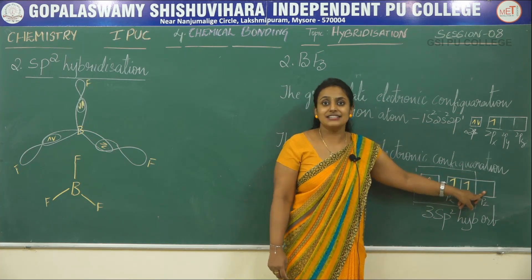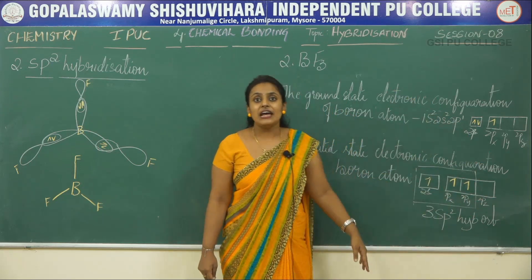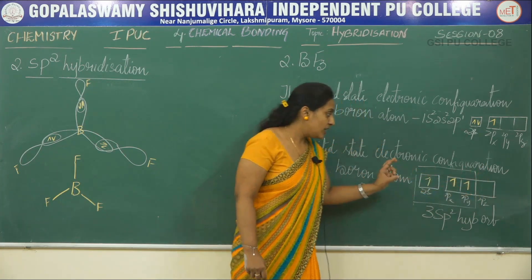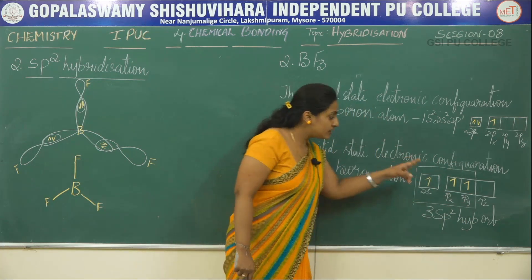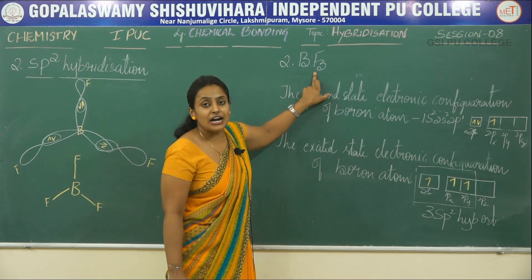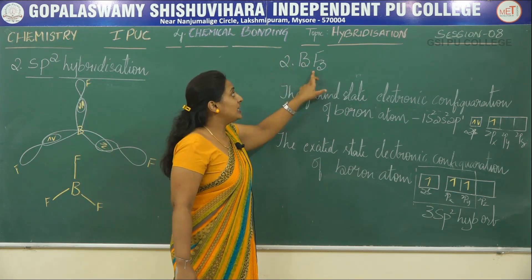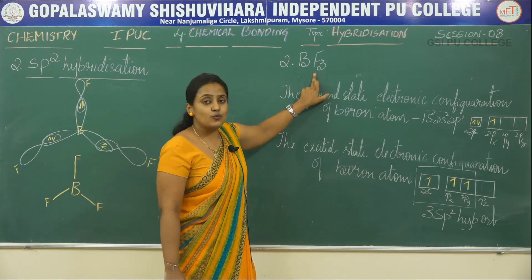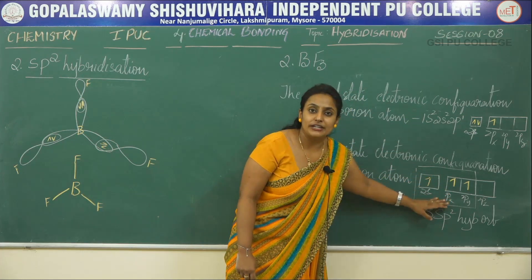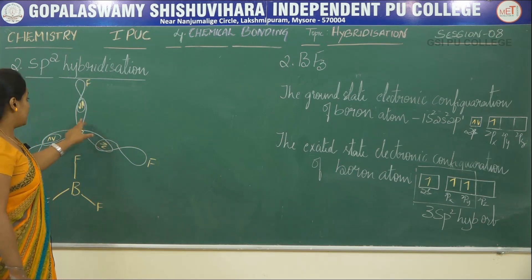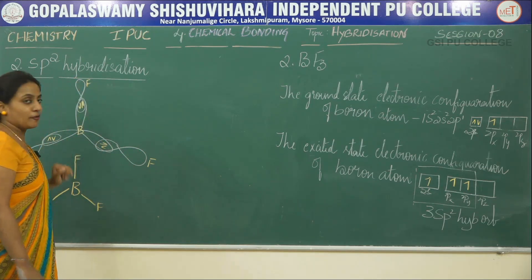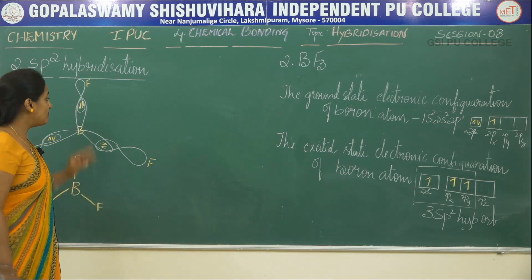There is one empty orbital after excitation, but we should not consider it for hybridization — only fully filled and half-filled orbitals are considered. Therefore, the three half-filled atomic orbitals intermix to give three sp2 hybrid orbitals. These three sp2 hybrid orbitals overlap with the half-filled atomic orbitals of the three fluorine atoms. Fluorine's outermost valence is in the p orbital, so the half-filled p orbital of fluorine combines with the sp2 hybrid orbitals to form three B-F bonds.